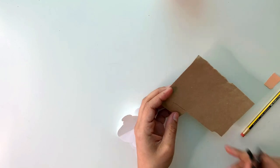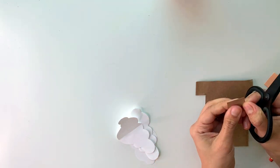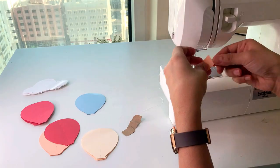For the base of the hot air balloon, cut out a small rectangular piece of brown paper. Fold this piece also into half. Now let's assemble everything together.